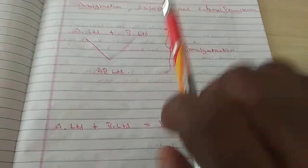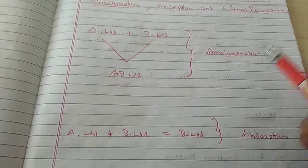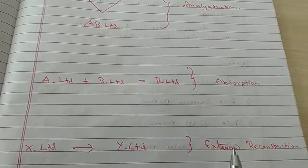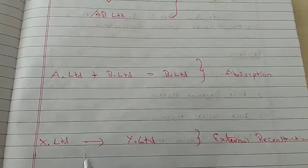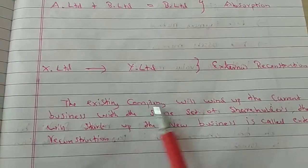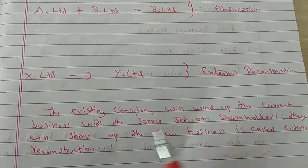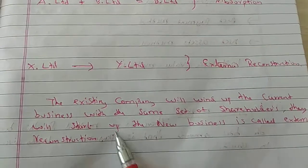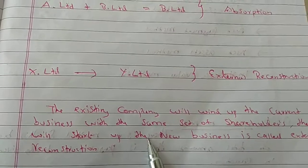In the previous cases, at least two companies are joined together to find one company. But for External Reconstruction, the existing company will wind up its current business with the same set of shareholders, and they will start up a new business. It is called External Reconstruction.